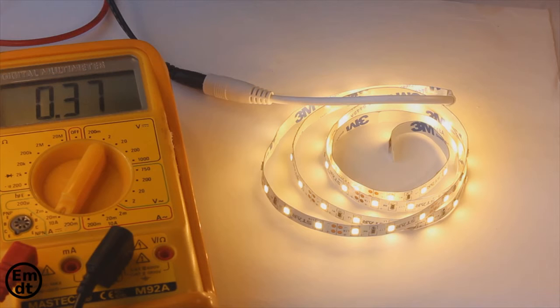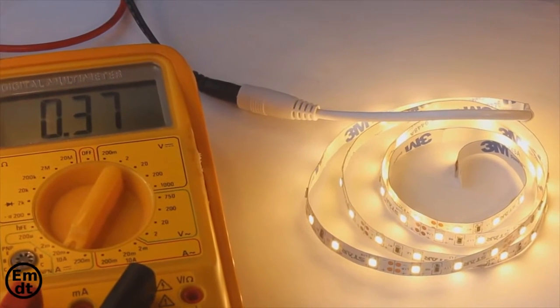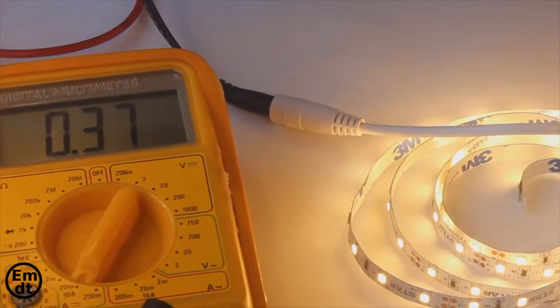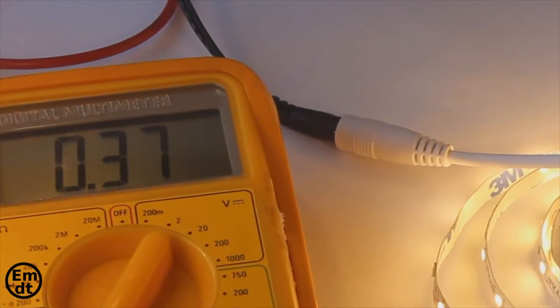That means that we can power a LED strip that needs 12V of voltage. Now you are seeing a LED strip of 1 meter, 3528 model, with 60 LEDs per meter that would consume 0.37A or 370mA.